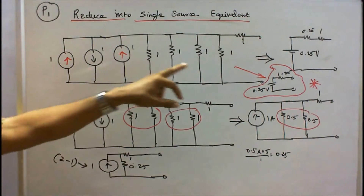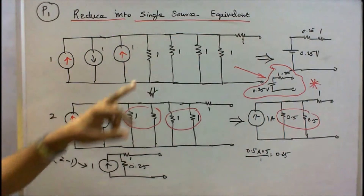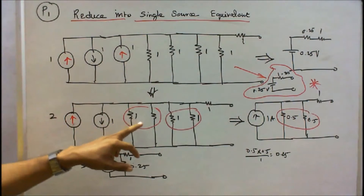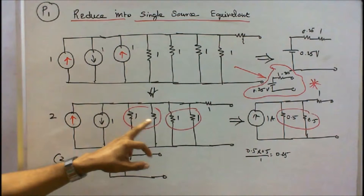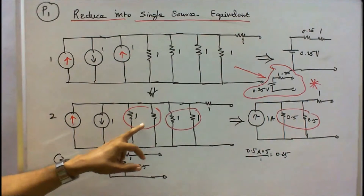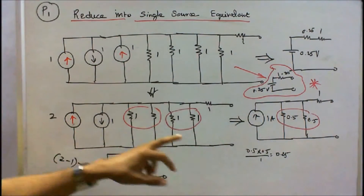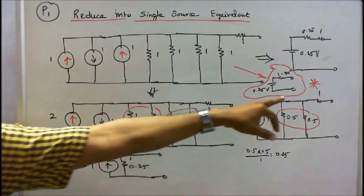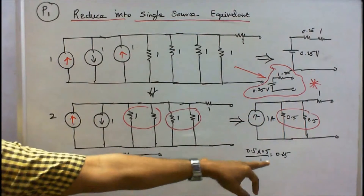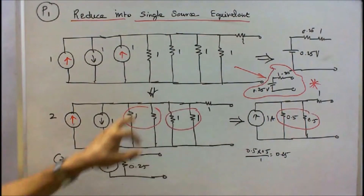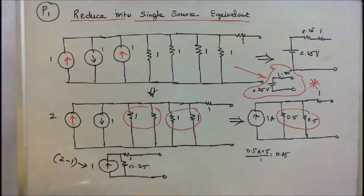The 4 resistors are connected in parallel. Taking the equivalent: 1 into 1 divided by 1 plus 1, that is 0.5. So 0.5, 0.5, and this is 1 ohm. The equivalent resistance is 0.25 ohms. The 4-resistance equivalent is 0.25 ohms.